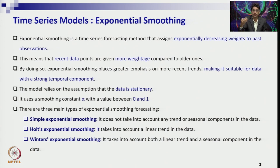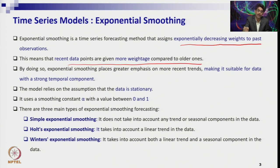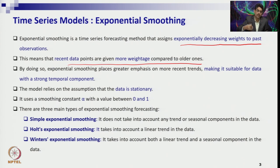In exponential smoothing, we give the highest weightage to the immediate period. The recent data points are given more weightage compared to the older ones, but the weightage reduces exponentially to the past observations. Theoretically, you consider all the past data in your process of averaging and forecasting. Since the weightage decreases in an exponential manner, we consider all the past data — that is why we call it the exponential smoothing method.